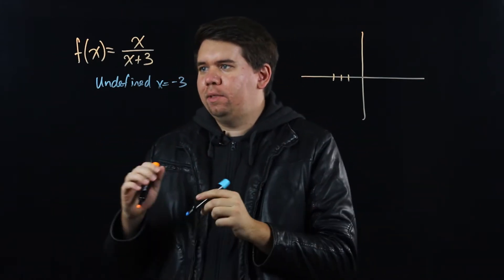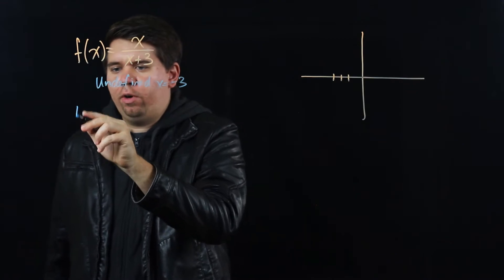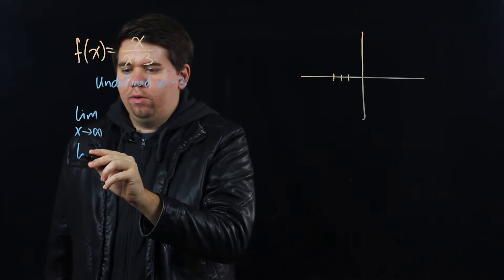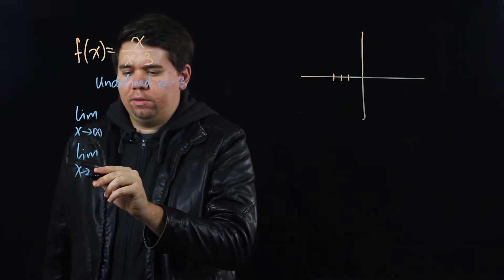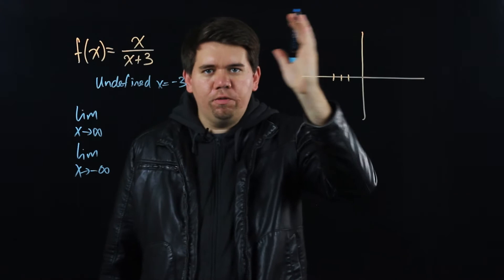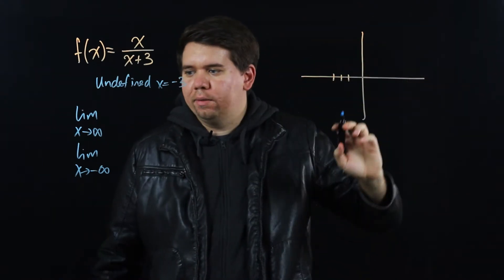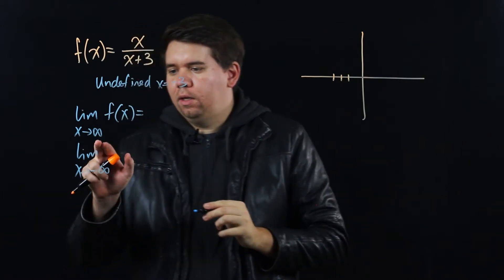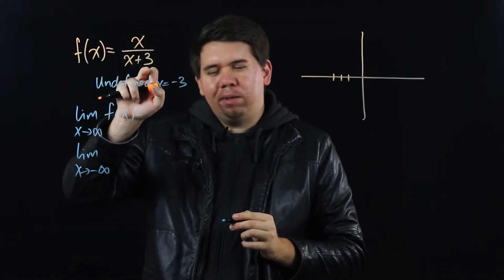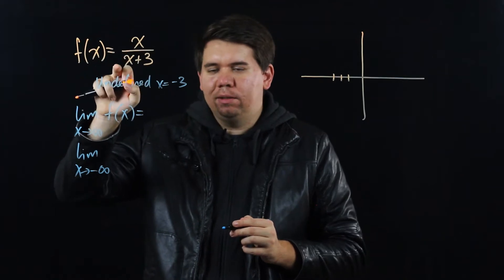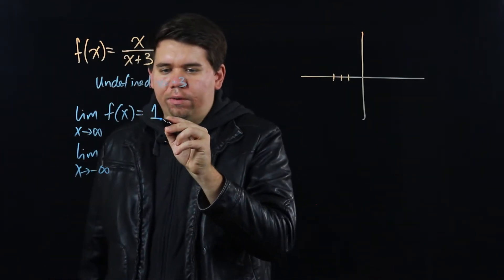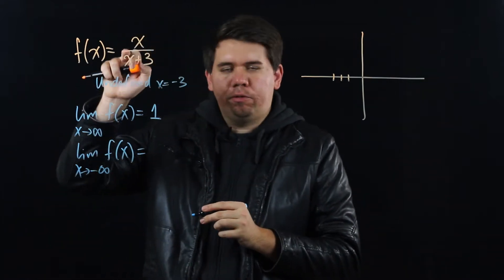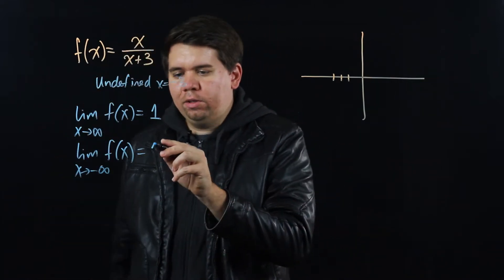We can then start looking at some limiting behavior. As with polynomials, we look at the limit as x goes to infinity and as x goes to minus infinity — that tells us what the graph does far to the left and right. As x goes to infinity, the plus 3 doesn't really matter, so it's just x over x, which has a limit of 1. The same is true for minus infinity.